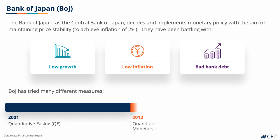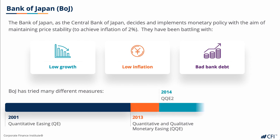They also brought in QQE — Quantitative and Qualitative Monetary Easing — in 2013, and QQE2 in 2014. This policy is meant to expand the monetary base by further increasing bond and other securities purchasing by the central bank, as well as increasing the duration of the assets that they've bought.